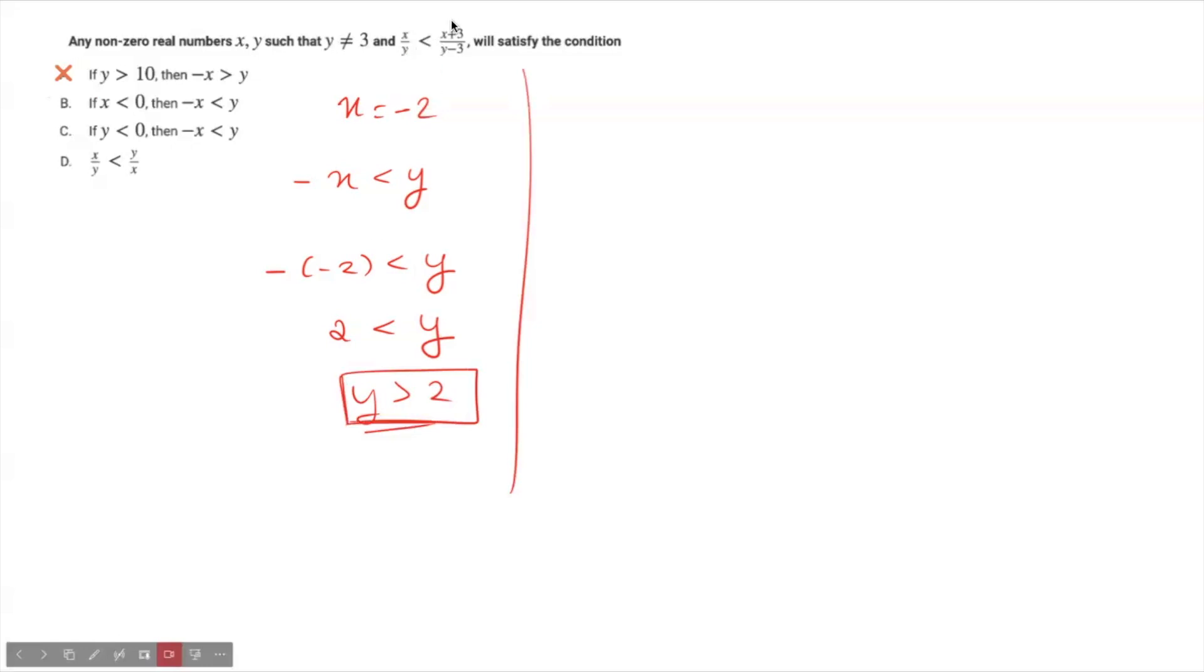So, let's substitute x as minus 2 in this equation and check whether we get y is greater than 2. I am putting minus 2. Minus 2 upon y should be less than minus 2 plus 3 upon y minus 3. So, minus 2 upon y is less than 1 upon y minus 3.